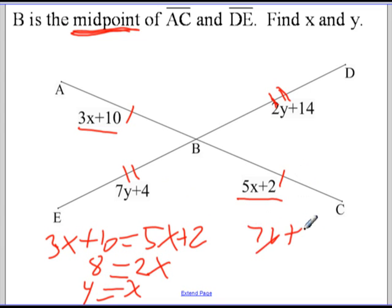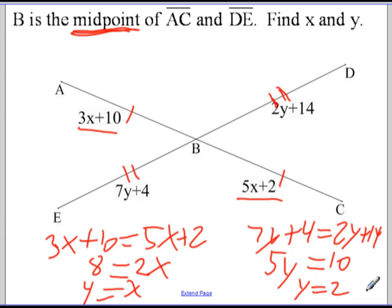And then similarly, 7y plus 4 is equal to 2y plus 14. I'm just going very quickly here, but you should probably write this out and do it yourself. Maybe even pause me and do that on your own first. Hopefully you did that. Subtract the 4, you get 10, and we get that y equals 2. So that's how the term midpoint and also segment addition can be used to solve problems in geometry.